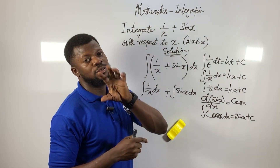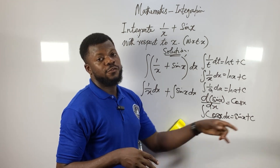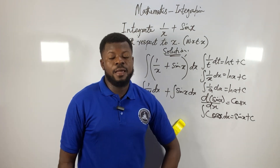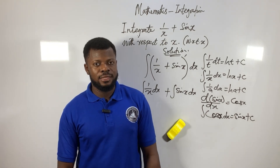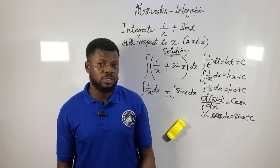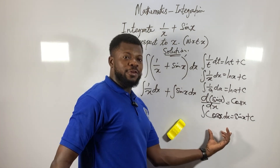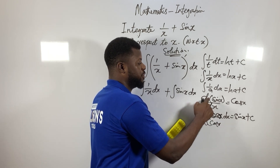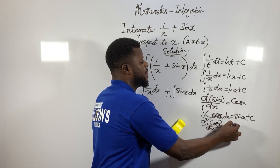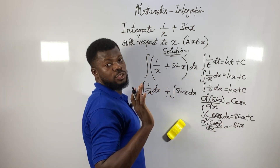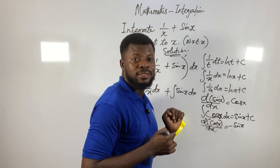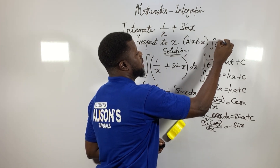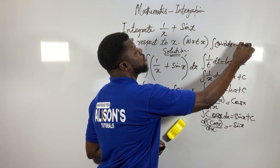Remember: anytime you integrate, you must add the constant of integration — plus C. In English they call it the 'arbitrary constant,' meaning you can assume any number for it. Now, what is the differentiation of cos x? The answer is minus sin x. So if I ask you to integrate sin x, the answer is minus cos x. Therefore: the integral of sin x with respect to x is minus cos x plus C.